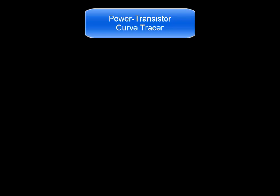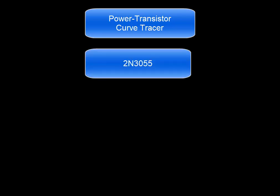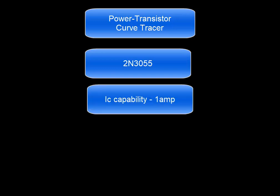This is a power transistor curve tracer. The 2N3055 is the transistor. The collector current capability is 1 amp.